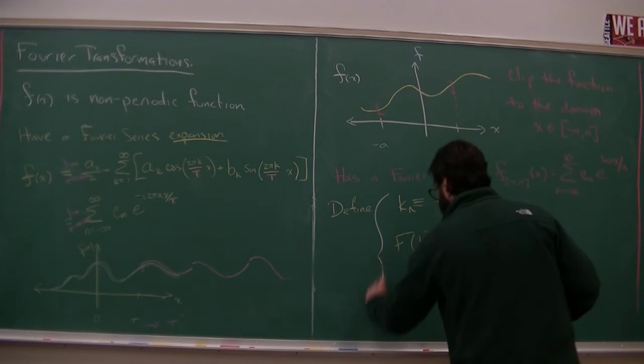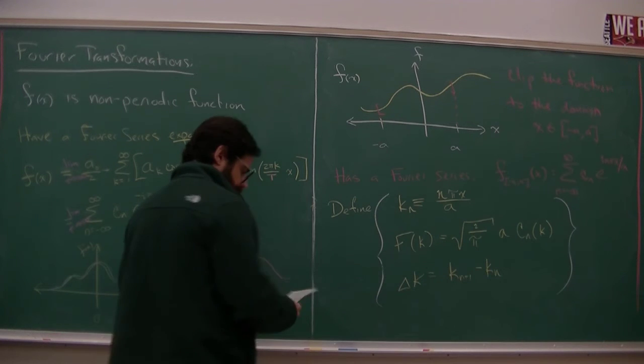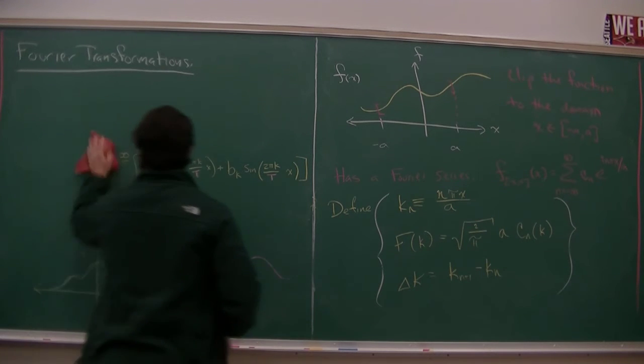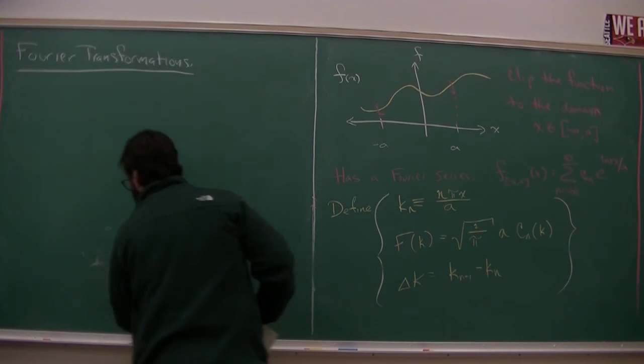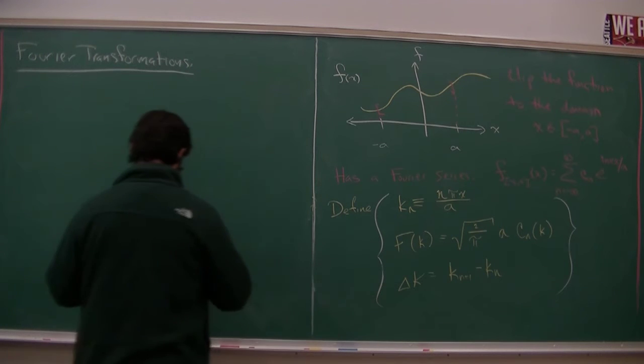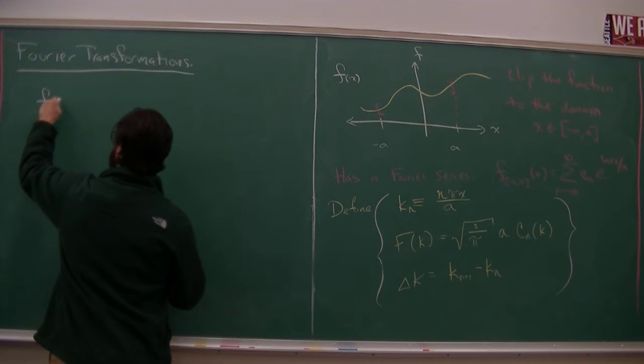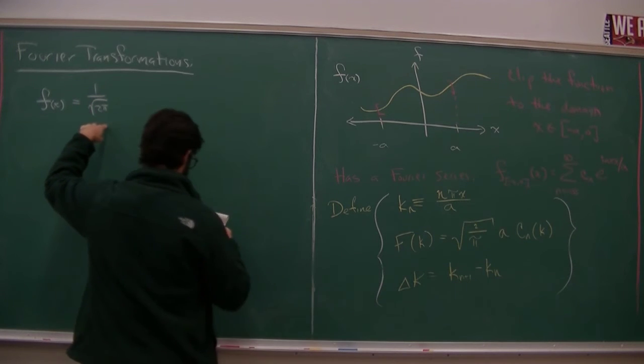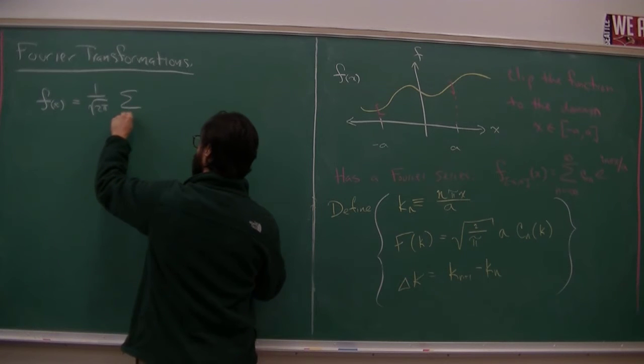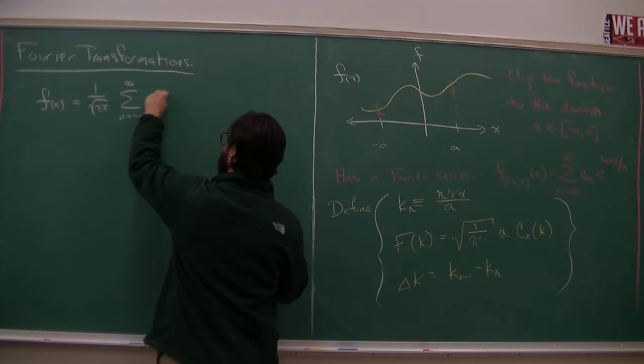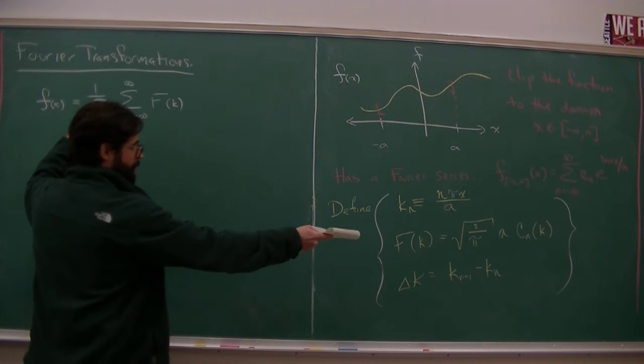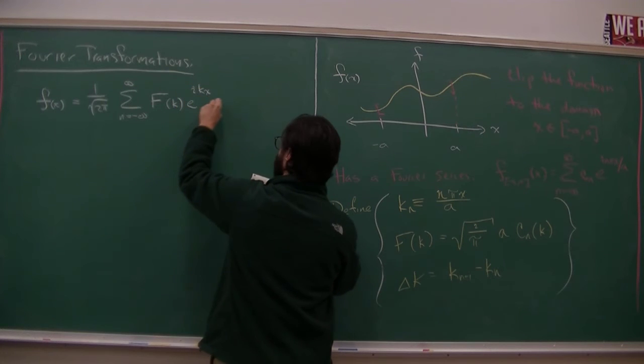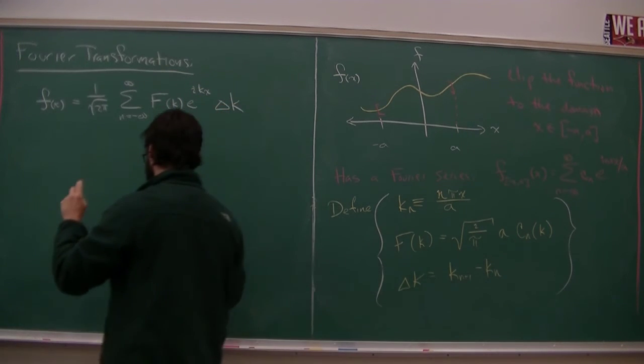So with all of this, these three definitions, what I can do is write something that does have a well-defined limit. So far we're just rephrasing. This is the Fourier series, but it's the Fourier series written in terms of our new terminology. We've got the 1 over 2 pi because we introduced the 1 over pi there. And then e to the i kx delta k. And maybe now you see where this is going.